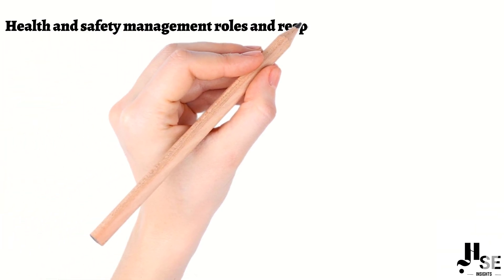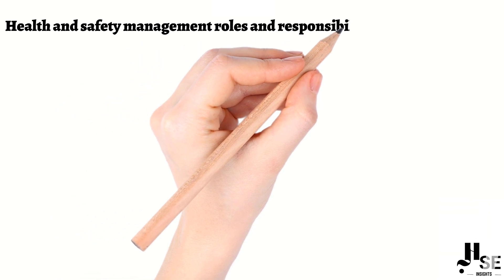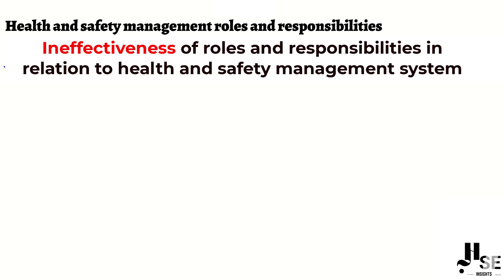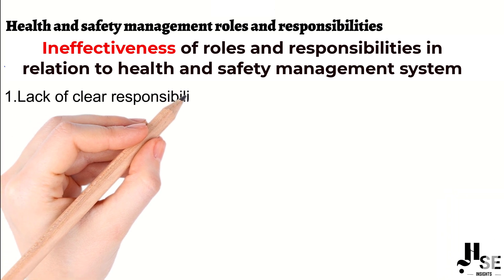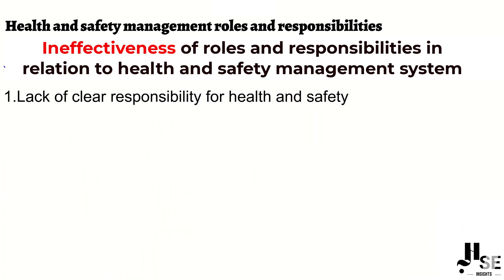Health and Safety Management Rules and Responsibilities. The effectiveness of roles and responsibilities can be considered ineffective based on the following points. Point number one: lack of clear responsibility for health and safety. This lack of a designated responsible person for health and safety indicates a failure in assigning clear roles and responsibilities.